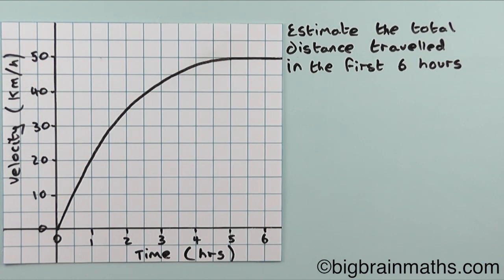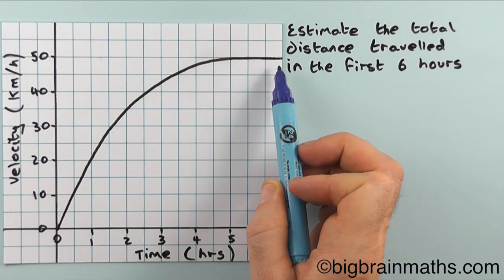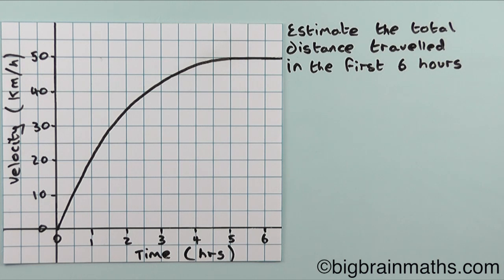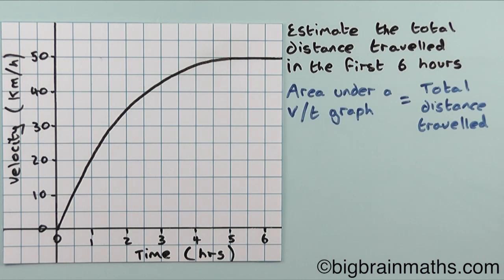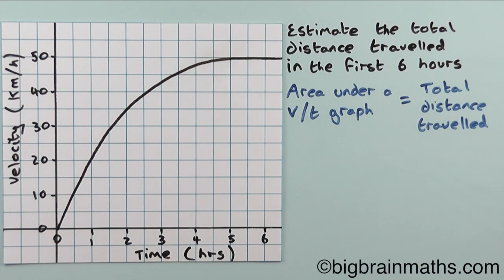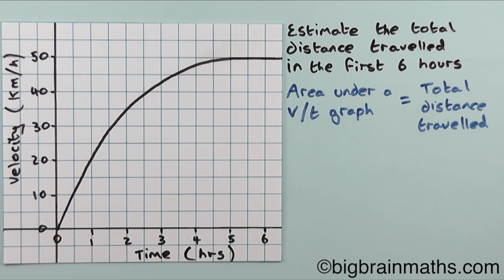In harder questions like this, the velocity-time graph you'll be given will be a curved graph, not a straight line graph. In this question we're asked to estimate the total distance travelled in the first six hours. Remember, the area under a velocity-time graph is equal to the total distance travelled. This question is really hard because there's no formula we can use to work out the area underneath a curved graph, but we only need to estimate it.